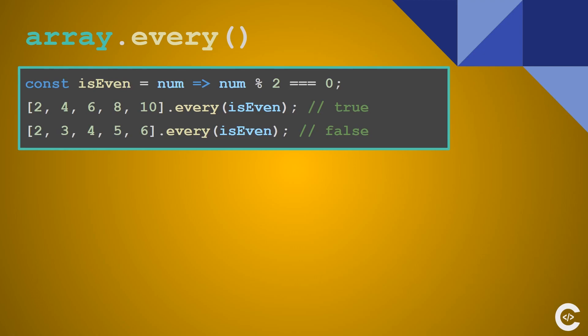The first method is every. The array basically accepts a callback and evaluates true or false from the callback whether the element satisfies the condition or not. The first line returns true because every element of the array satisfies the condition isEven. The second line returns false because there are elements which don't satisfy the condition isEven.